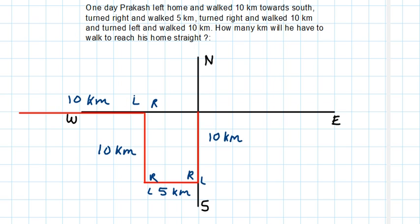It will be clear. How many kilometers will he have to walk to reach his home straight? If you want to know this, we mark the points - this point, Prakash is at this point. When we measure the distance, we can see here clearly: this is 10 kilometers, and here we see this is 5 kilometers. This is 5 kilometers.